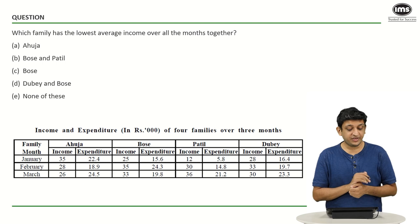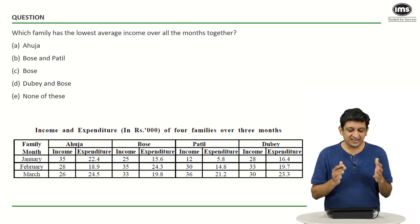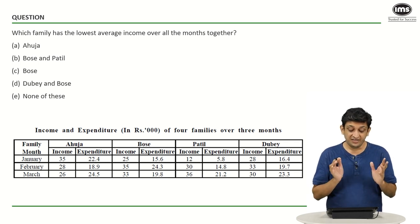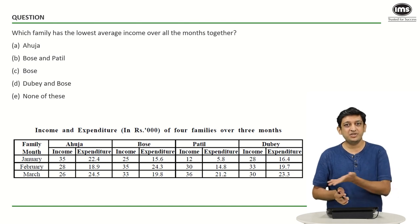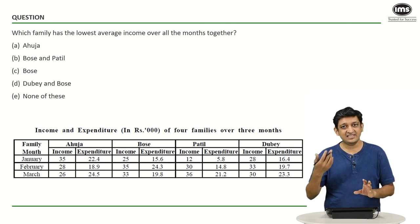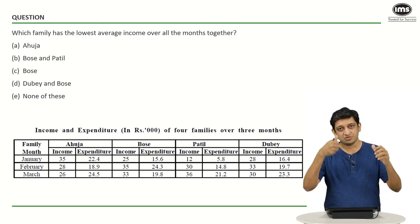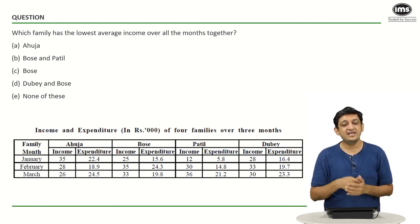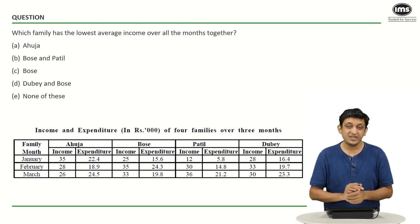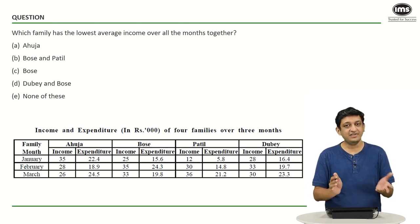In this question, you have to find which family has the lowest average income over all the months together. A mistake many people make is trying to calculate the average for each family. But if you are dividing each number by 3, even the sum gives a good comparison — you can just look at total incomes instead of computing the average separately, saving a precious step.